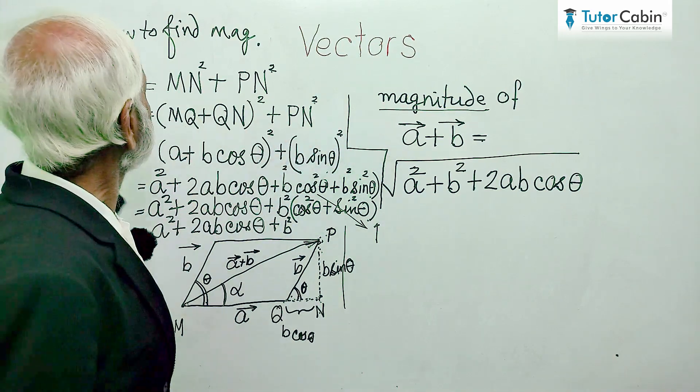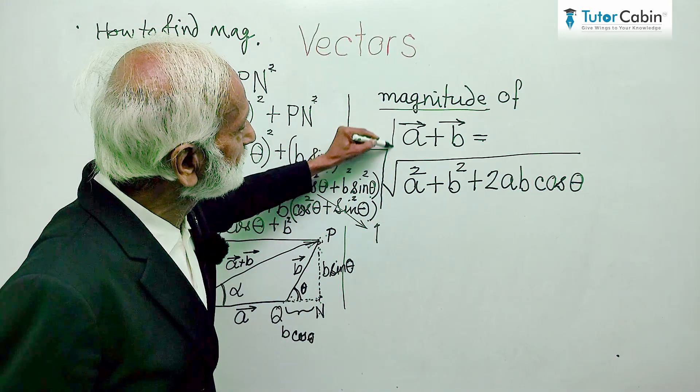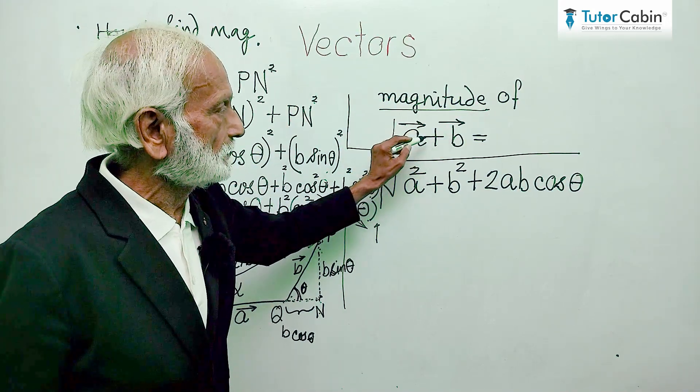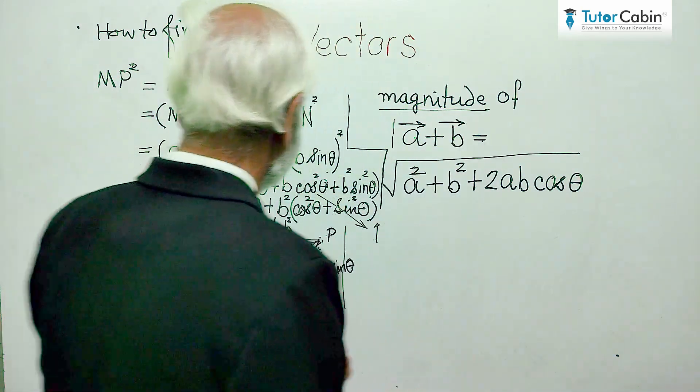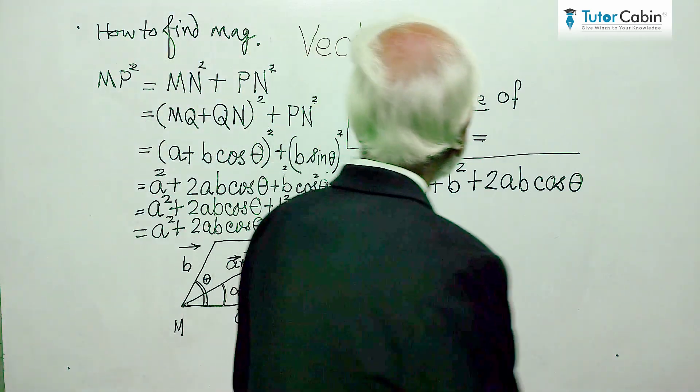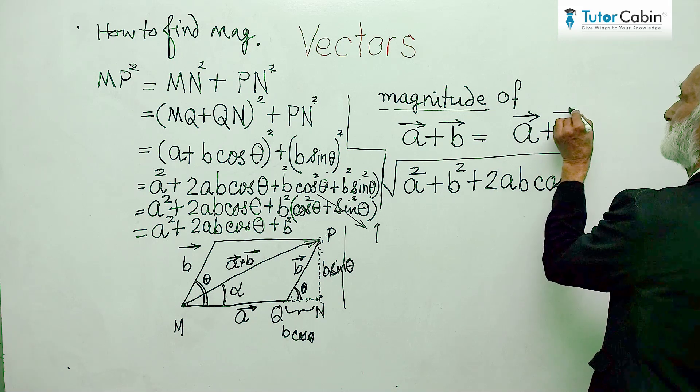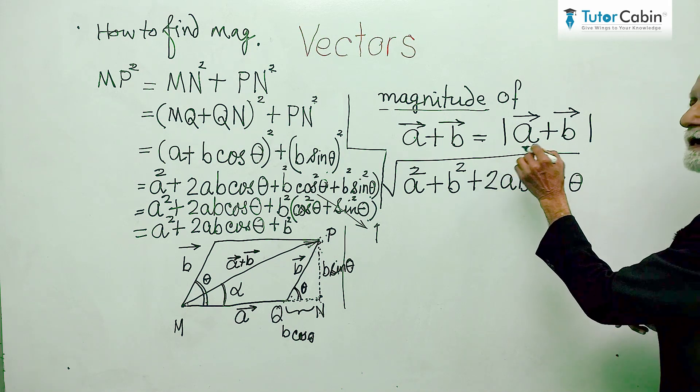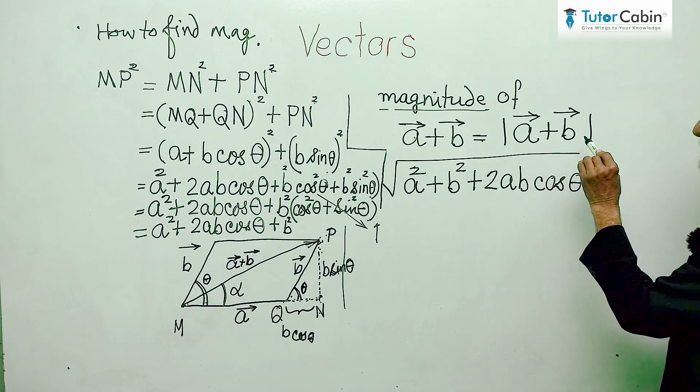So, MP that is AB - rather I should write magnitude of AB. Either we write full magnitude of a vector plus b vector, or we can simply write with this symbol. When we put two parallel lines like this, this parallel lines indicates that we are talking about only magnitude of vector a plus vector b.